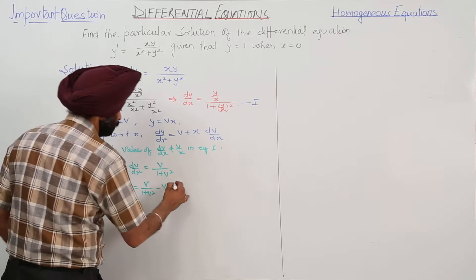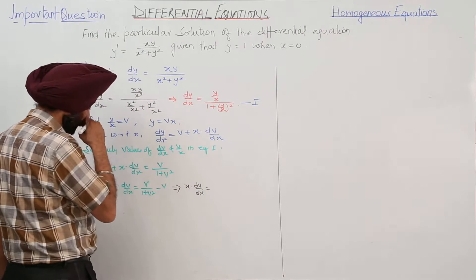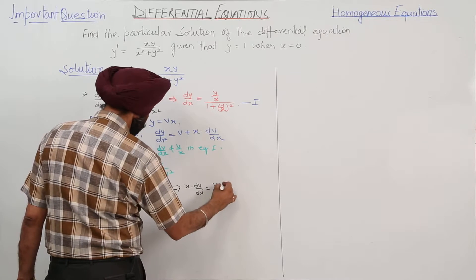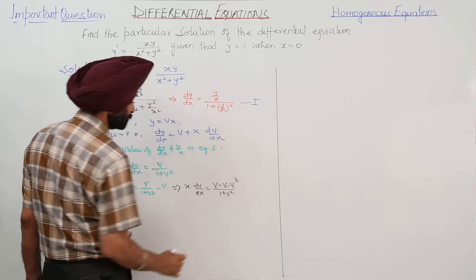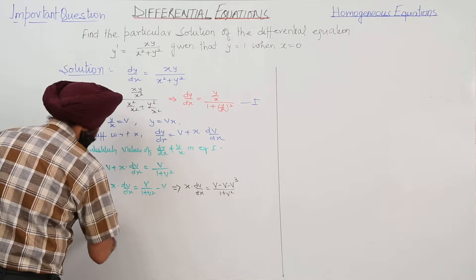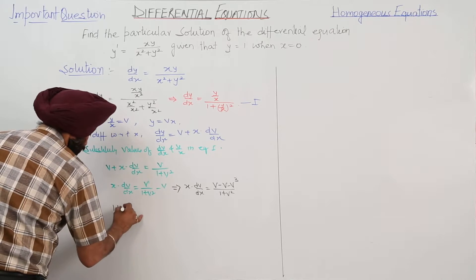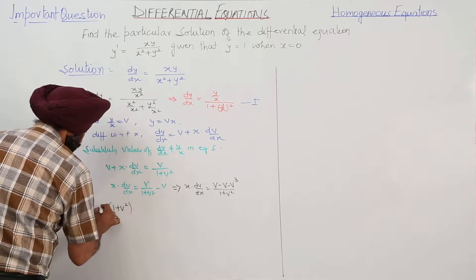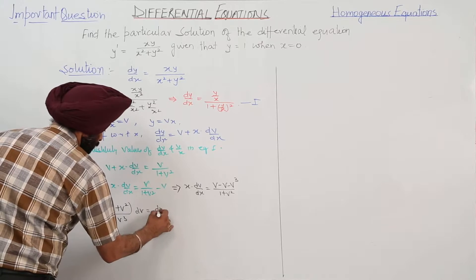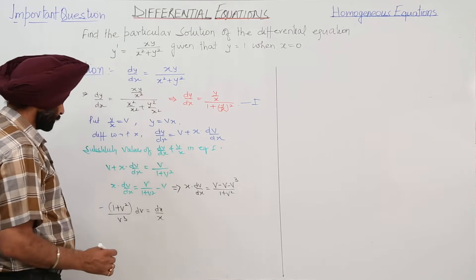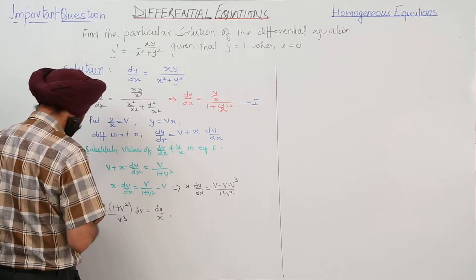This implies x·(dv/dx) = v/(1 + v²) − v = −v³/(1 + v²). Separating the variables, with v and v canceling, we get (1 + v²)/v³ dv = dx/x.